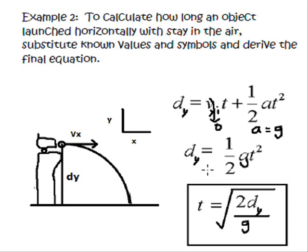And we're left with DY equals 1 half. And acceleration again, just like in free fall, is gravity. So we can substitute that there. So we end up with DY equals 1 half GT squared.